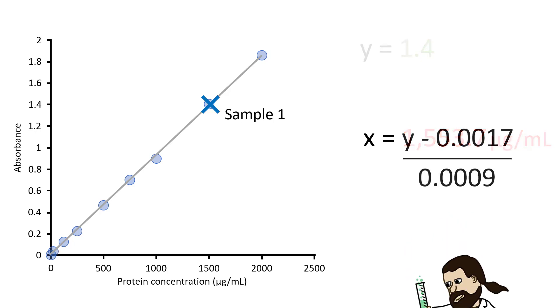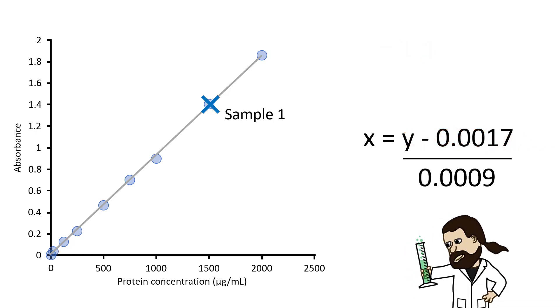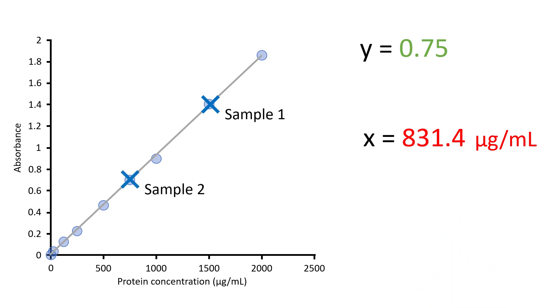Let me now repeat the process for a second sample and for this second sample when I measured this on a plate reader I got a value of 0.75. Entering this into the rearranged equation eventually gives a value of 831.4 micrograms per milliliter. So that's how you can solve a simple linear regression equation.